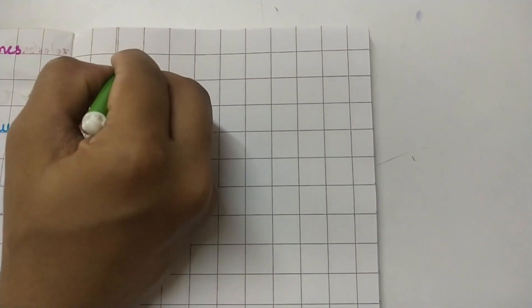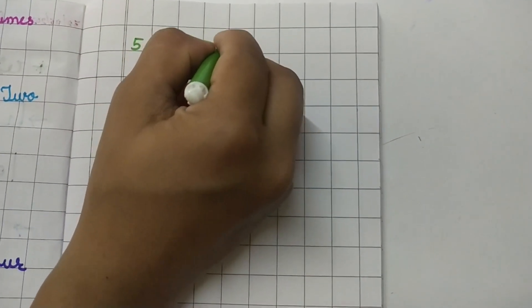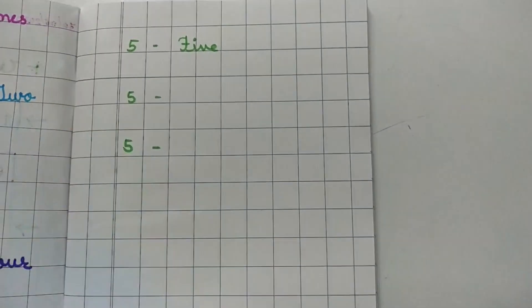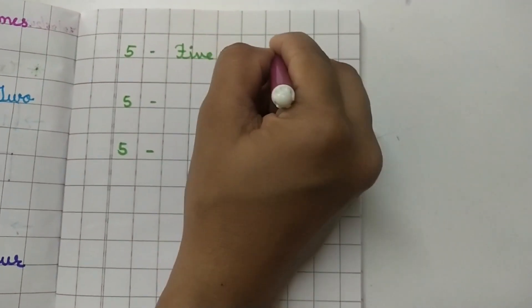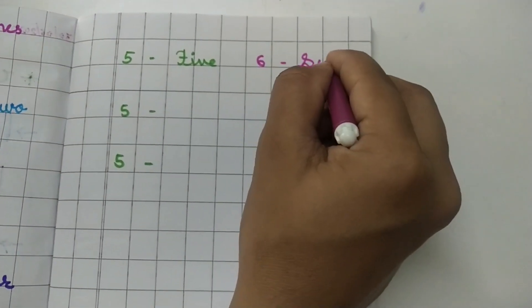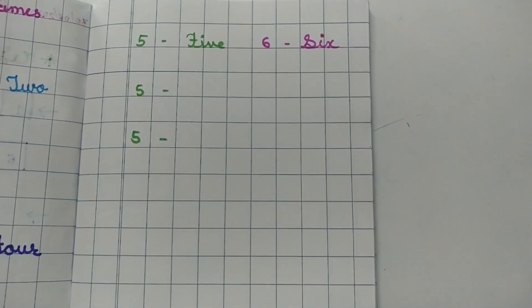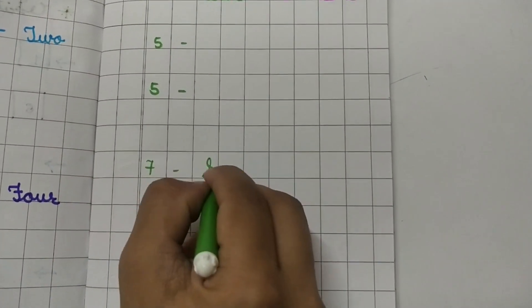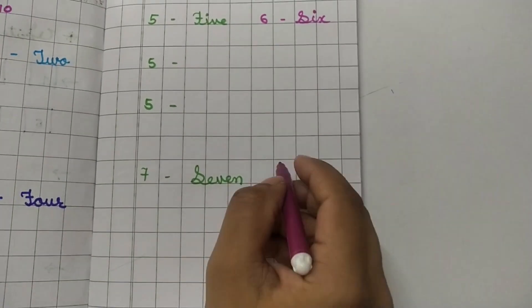Now on the next phase, after 4 write 5 — FIVE — 5. You have to write 3 times. After 5, write 6. Leave 1 line and write down 6 — SIX — 6. 3 times. After 6, write 7 — SEVEN — 7. How many times? 3 times.